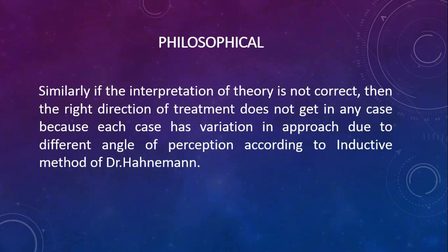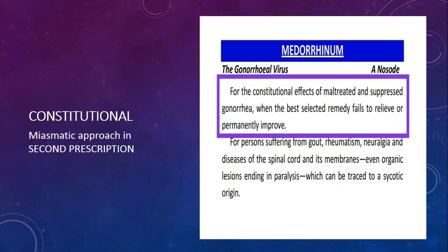Philosophically, if the interpretation of theory is not correct, then the right direction of treatment does not emerge in any case, because each case has variation in approach due to different angles of perception according to the inductive method of Dr. Hahnemann. For example in Medorrhinum: for the constitutional effects of maltreated and suppressed gonorrhea, when the best selected remedy fails to relieve or only palliates, then it is permanently improved. This constitutional symptom is part of the 2nd prescription.